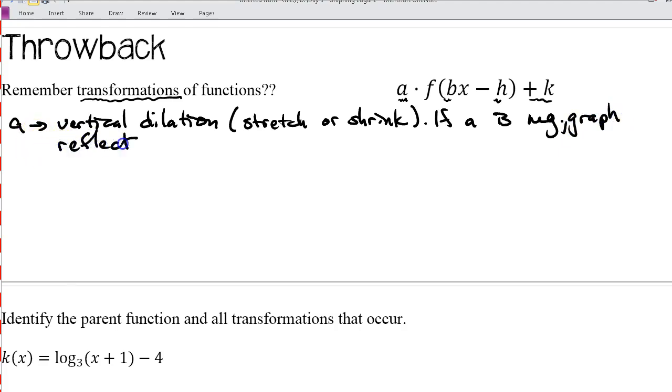And then if a is negative, the graph reflects over the x-axis, so it'll just flip. If you have any questions, just pause the video and write those down so you can ask me the next time you see me. Moving on to b,